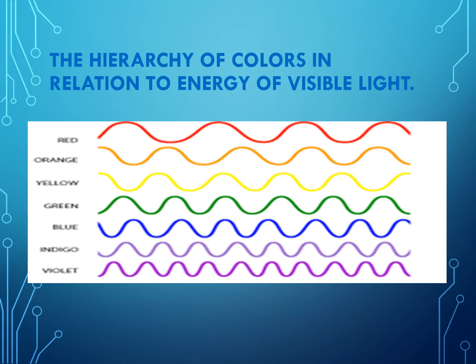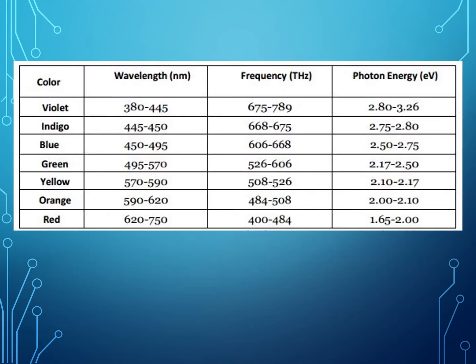What we're going to compare in this topic are: first, the wavelength; second, the frequency; and third, the energy of light. The wavelength is measured in nanometers, frequency in terahertz, and photon energy in electron volts. The range of wavelength starts with violet at the top of this table, going down to red.